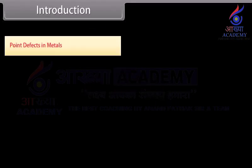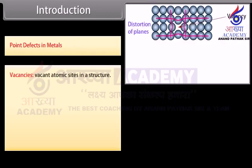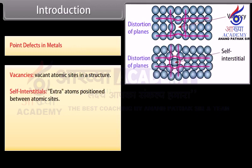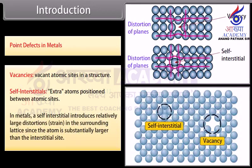Point defects in metals: Vacancies are vacant atomic sites in a structure. Self-interstitials are extra atoms positioned between atomic sites. In metals, a self-interstitial introduces relatively large distortions and strain in the surrounding lattice, since the atom is substantially larger than the interstitial site.